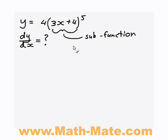What you can do to differentiate this is a process called the chain rule. What you have to do first of all is let some new variable, let's use u, equal the function inside the brackets. So in this case, I'm going to let u equals 3x plus 4.